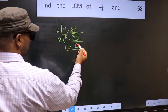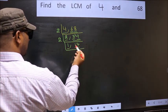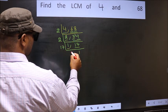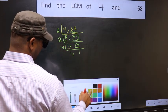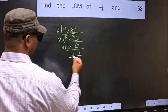So focus on the other number 17. 17 is a prime number. So 17, 1's 17. Now we got 1 in both the places.